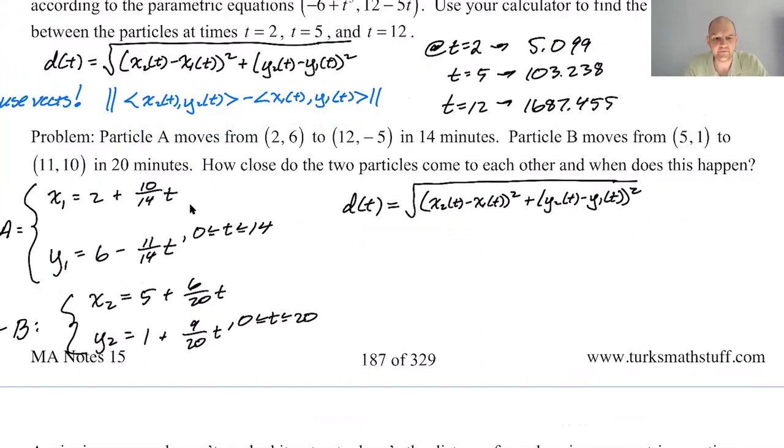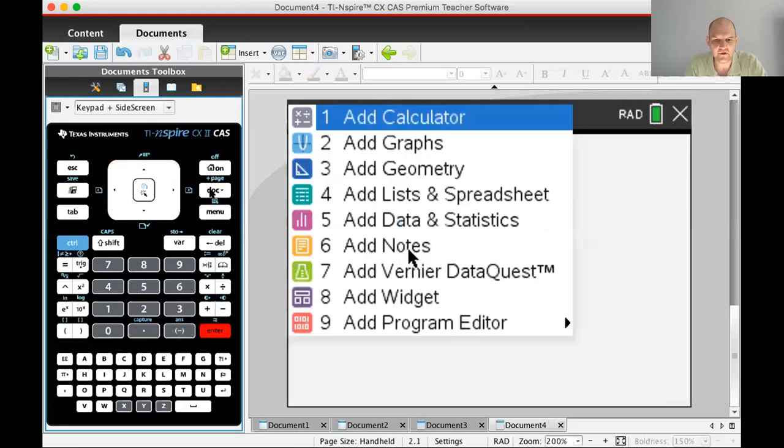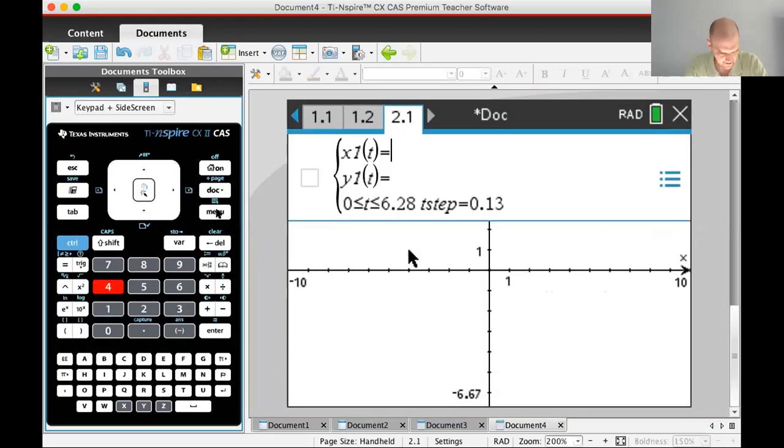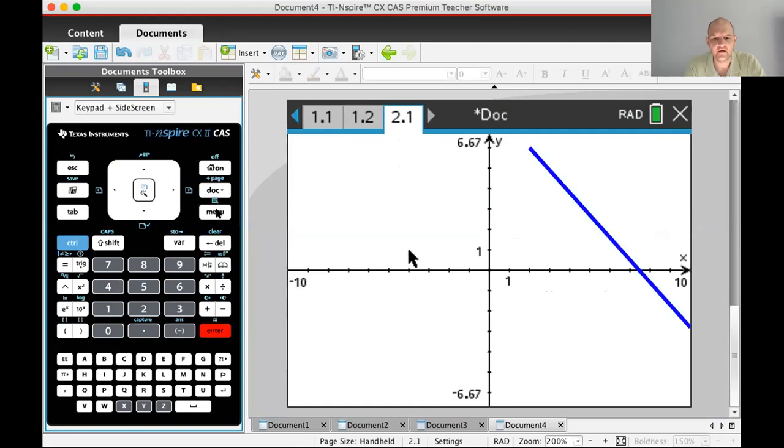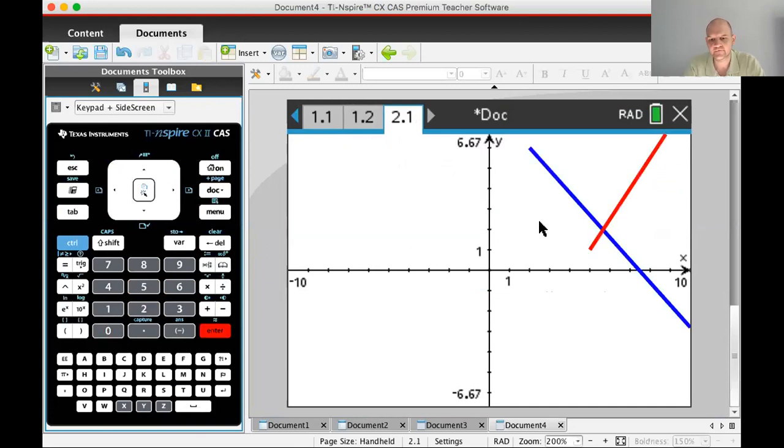Let's go to the calculator and see what we can learn. So go over here. We're gonna do most of the same things. I'm just going to start a new problem here. Go to the graph page because I think that's the easiest place to enter these. So 2 plus 10 over 14t. 6 minus 11 over 14t. And it should take 14. So I'm just going to change it. Okay. And then 5 plus 6 over 20t. 1 plus 9 over 20t. And to 20. Okay.